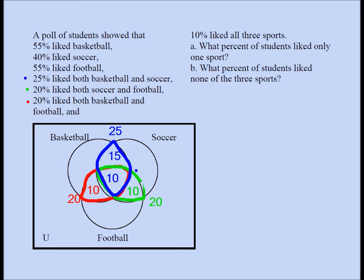Now, 55% like football. It doesn't say only football — so the four regions inside the football circle should add up to 55. With 10, 10, and 10 already placed, the only-football region must be 25. Then, 40% like soccer — the four regions inside the soccer circle should add up to 40. I have 10, 10, and 15 already, which is 35, so the only-soccer region must be 5.